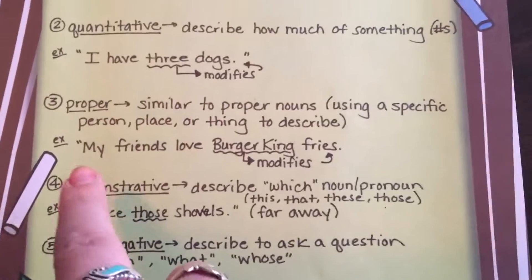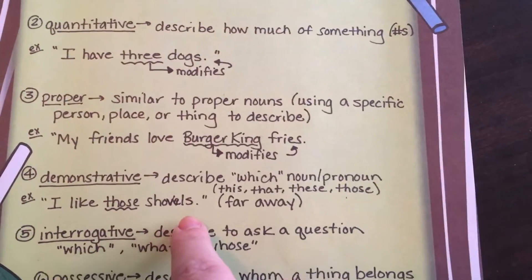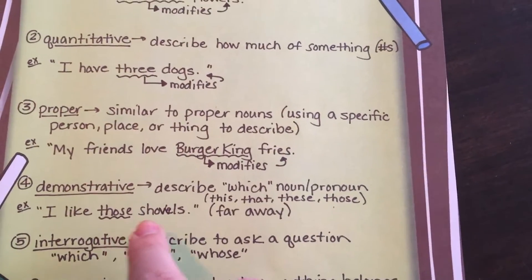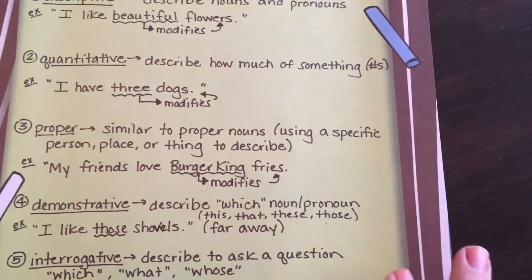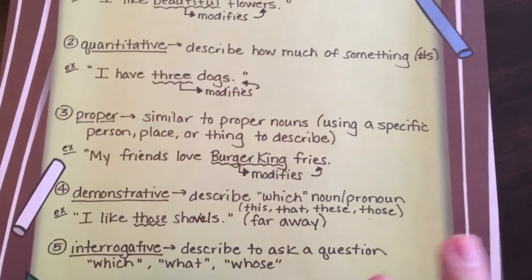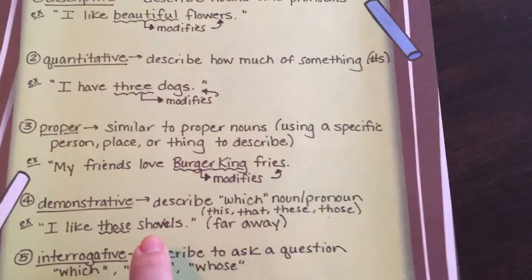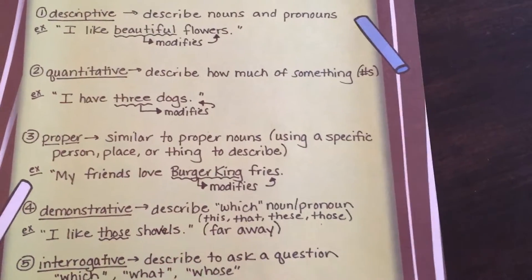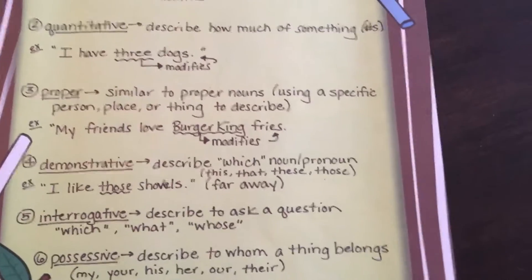Here our example is 'I like those shovels.' Those is being used to insinuate that the shovels are farther away — they're a little over there. You can also say 'I like these shovels,' which means that maybe the shovels are either in your hand or close to you.